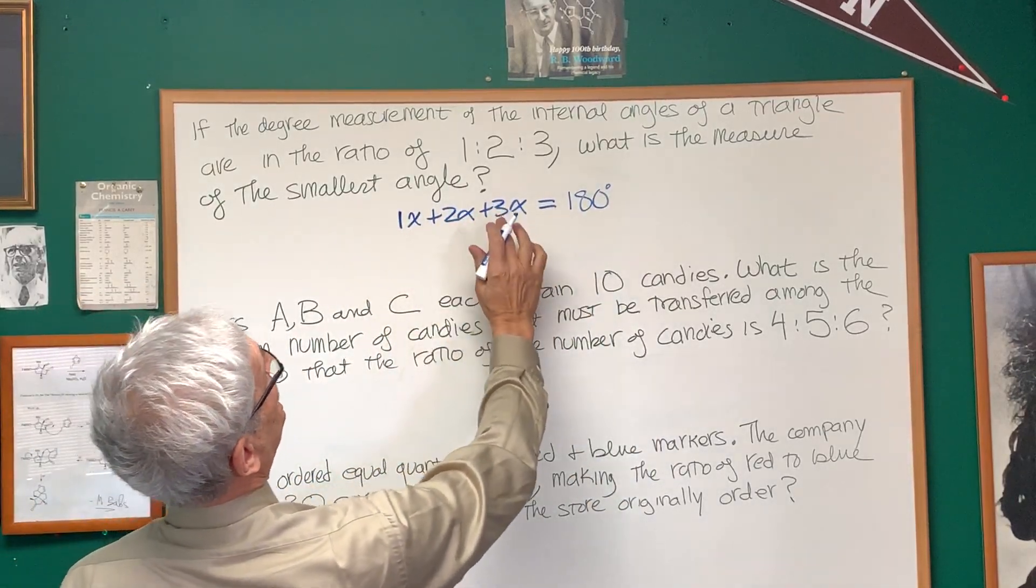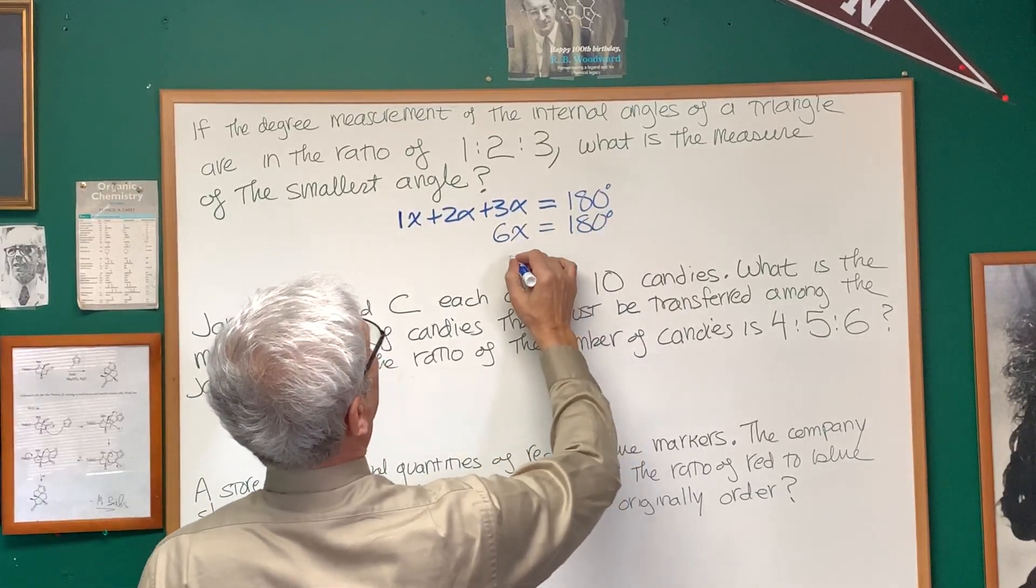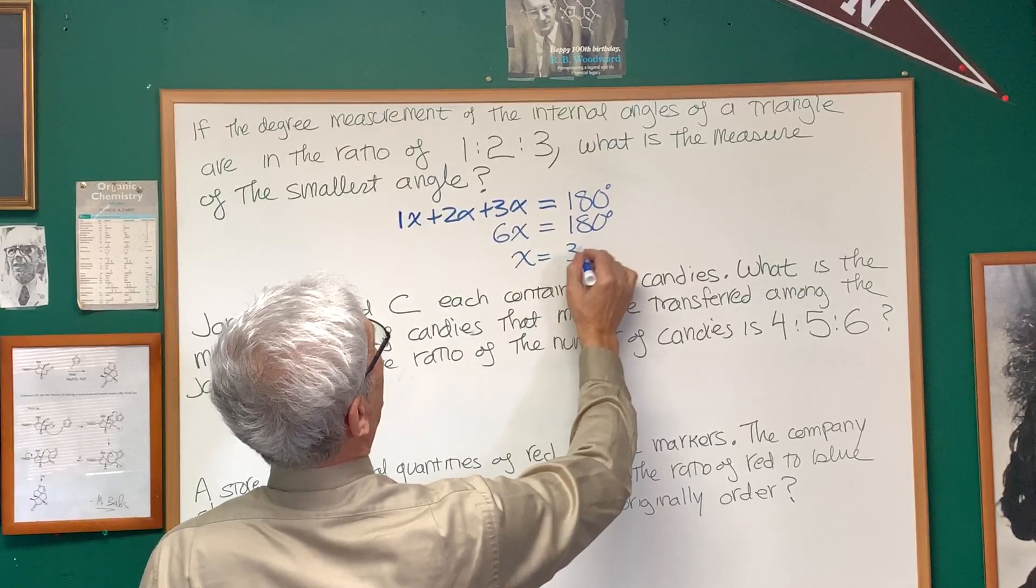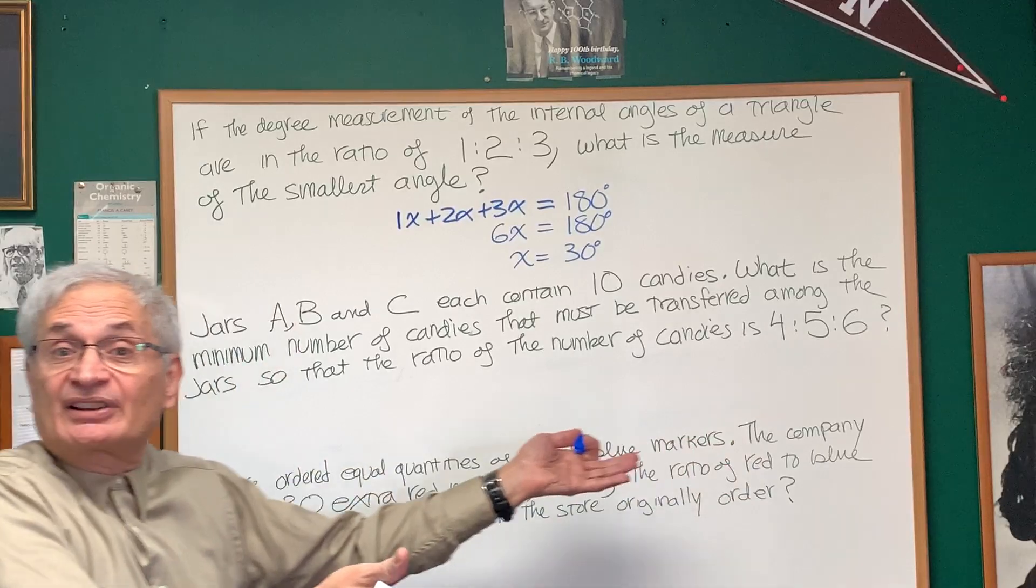1x plus 2x is 3x plus 3x. That's 6x is 180 degrees. Divide both sides by 6. x equals 30 degrees. That's the measure of the smallest angle, and we have solved it.